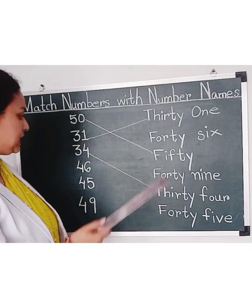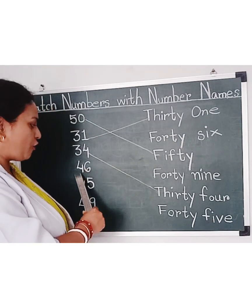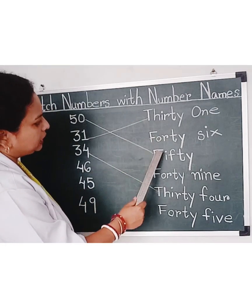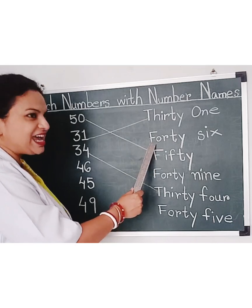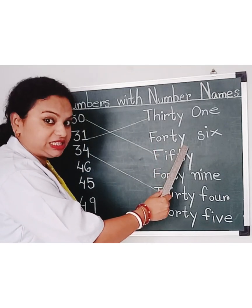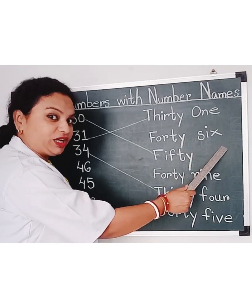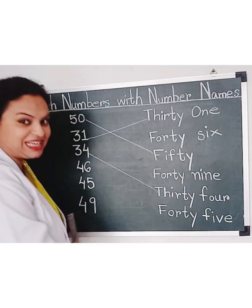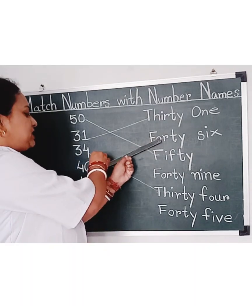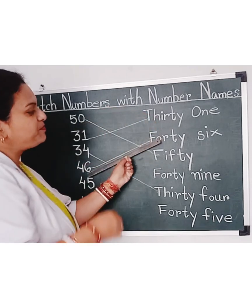Now, let's see which one is the next number. 46. Yes, here it is — F, O, R, T, Y — Forty; S, I, X — Six. Forty-Six, 46. Let's match it. Let's match the numeral 46 with its number name.